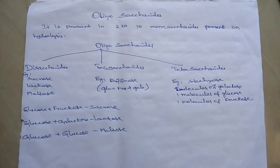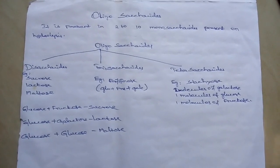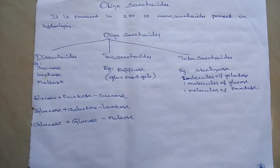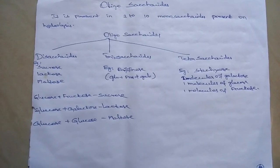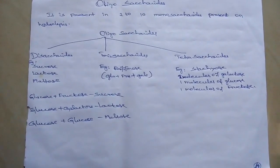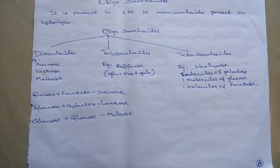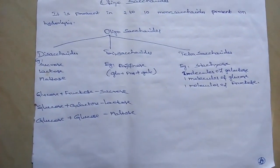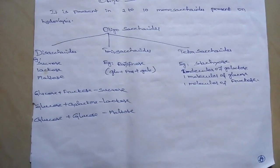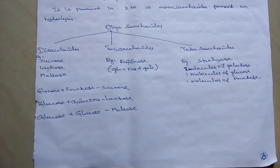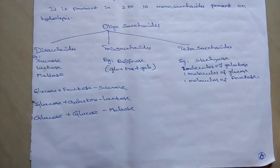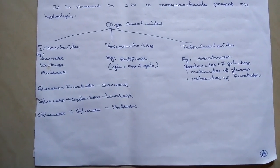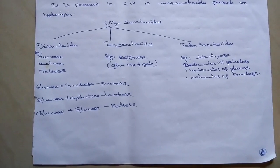Oligosaccharides contains two to ten monosaccharide units on hydrolysis. Oligosaccharides is classified into three types: disaccharides, trisaccharides and tetrasaccharides. Disaccharides contains two subunits of monosaccharides. Examples are sucrose, lactose and maltose. Sucrose contains glucose and fructose. Lactose contains glucose and galactose. Maltose contains two glucose units.